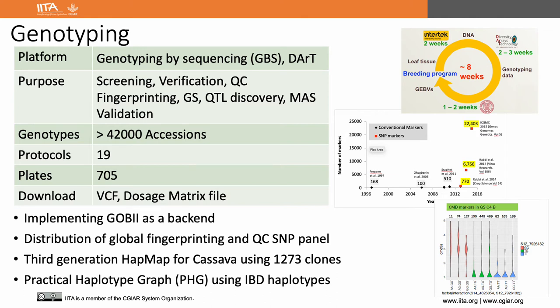The third generation HapMap for cassava was produced at Buckler's lab at Cornell. The genotyping data can be easily downloaded for the required set of clones in both VCF or dosage format. The BTI team has been continuously working on improving genotyping data handling to make it more user-friendly.